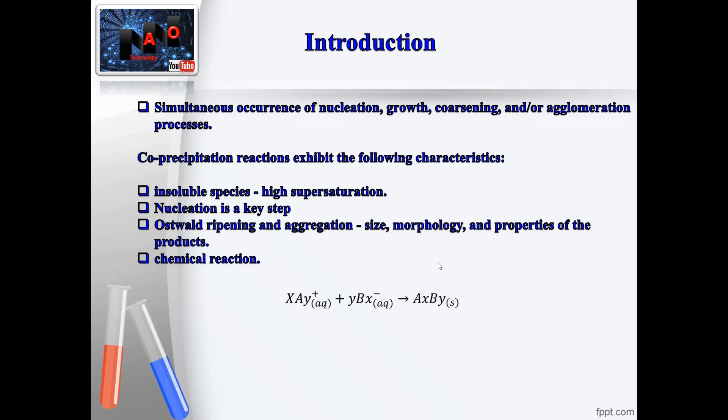Co-precipitation reactions exhibit the following characteristics. First, the products are generally insoluble species formed under conditions of high supersaturation. Second, nucleation is a key step and a large number of small particles will be formed.